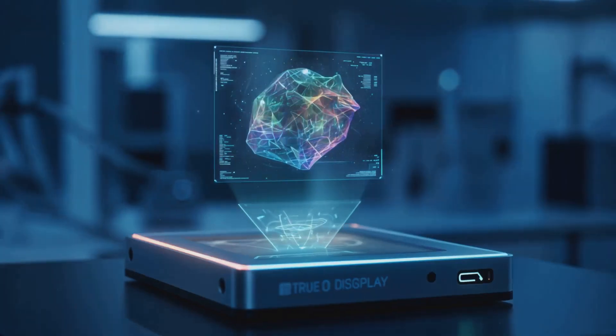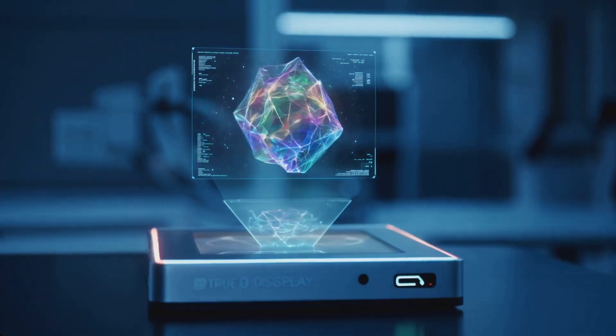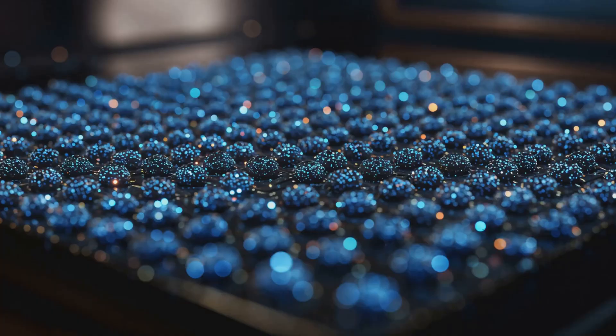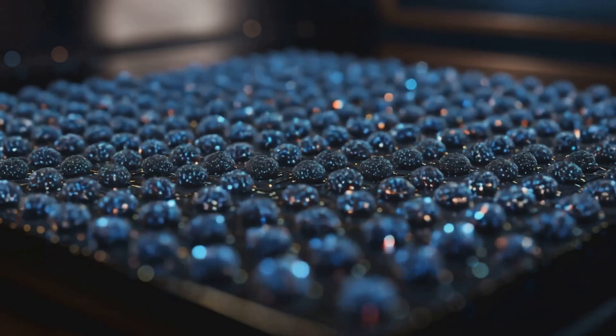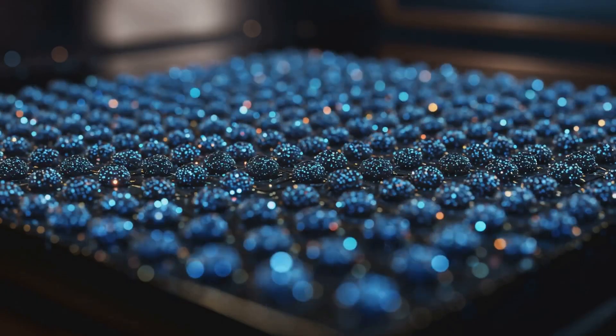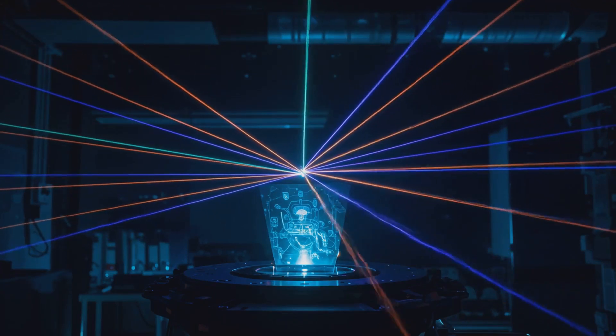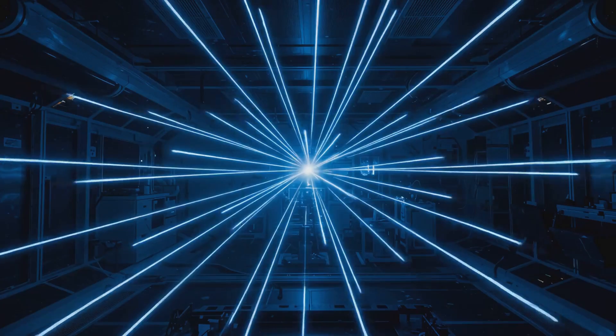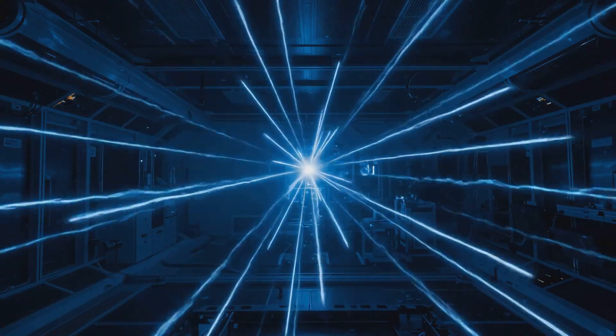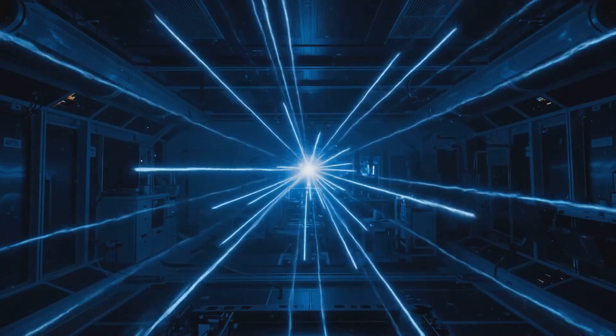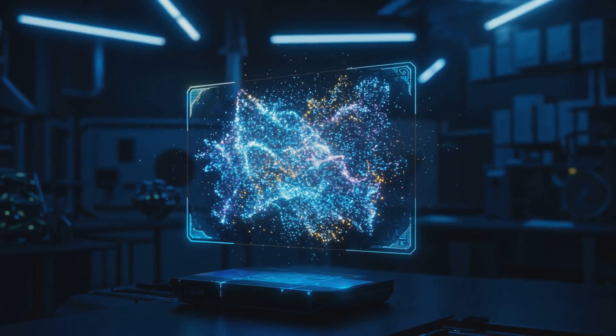Inside each display is a grid of quantum dots, each just billionths of a meter wide. These dots don't shine like regular pixels. Instead they spin and pulse in carefully timed ways, releasing light that meets in mid-air. When that light overlaps just right, it interferes, and that interference creates floating points of light in real space.